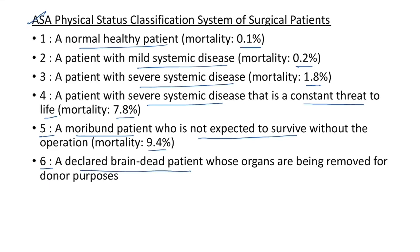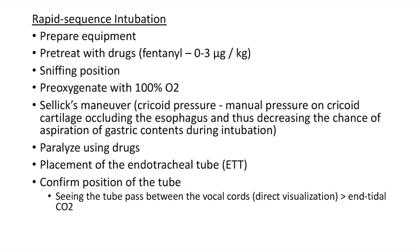ASA 6 is a declared brain dead patient whose organs are being removed for donor purposes. Now let us see about rapid sequence intubation, and the mnemonic to remember the steps is 8 P's.